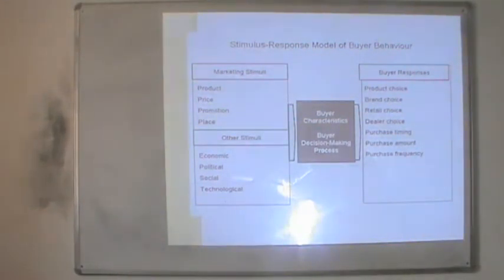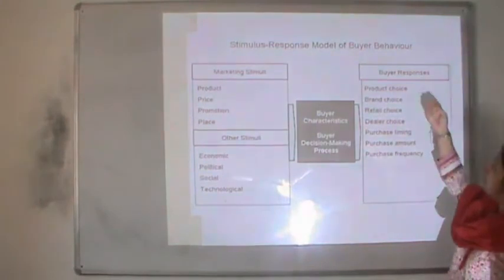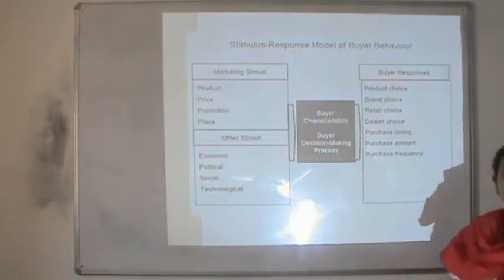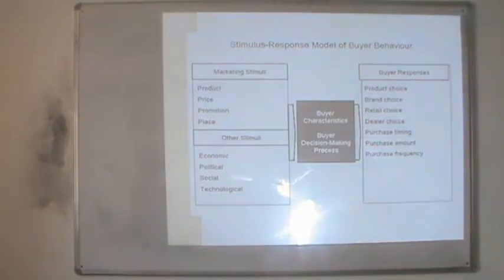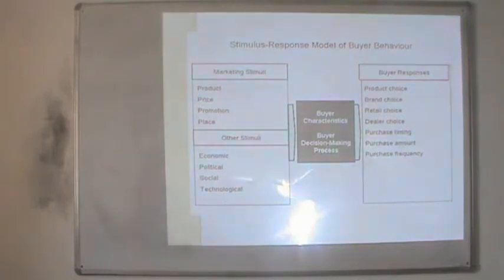When these stimuli act upon the organism, responses are expected in the form of the choice of product, the brand chosen, the dealer chosen, and the purchasing time, amount and frequency. Why every consumer generates a different response depends on the black box — this is why this model is also known as the black box model. Every consumer is assessed on two things: their characteristics such as background, personality and thinking, and the way they undertake the decision-making process, whether they are quick decision-takers or take time going through each stage.